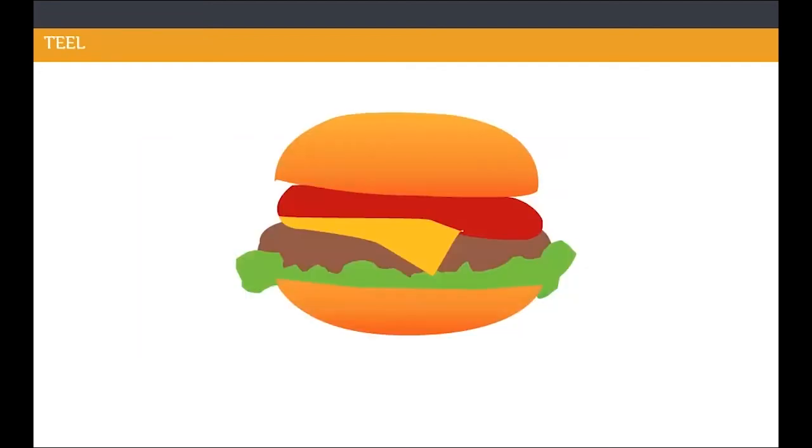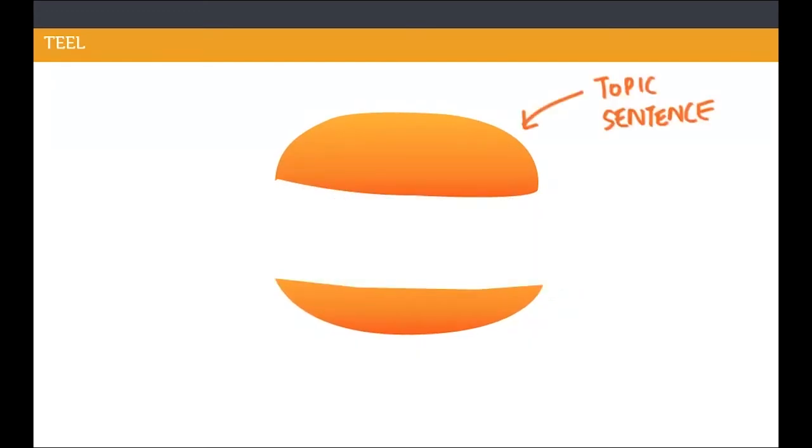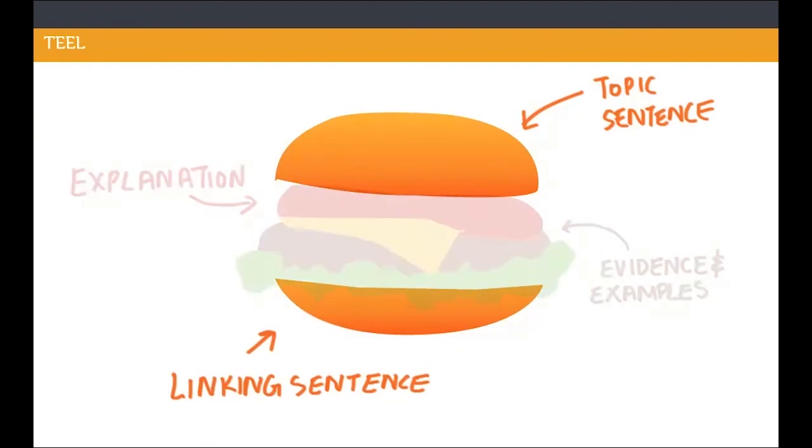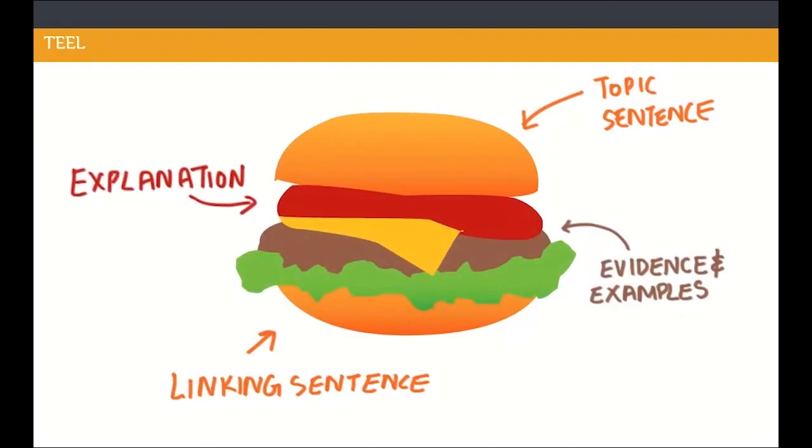The hamburger is a good metaphor for a paragraph. Notice that the bread roll, which is the topic sentence at the beginning and the linking sentence at the end, hold the ingredients together—because without it, you don't have a hamburger.